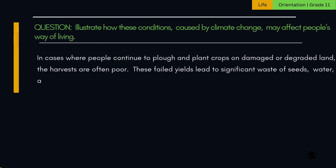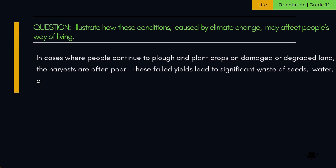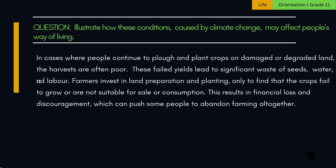In cases where people continue to plow and plant crops on damaged or degraded land, the harvests are often poor. These failed yields lead to significant waste of seeds, water, and labor. Farmers invest in land preparation and planting, only to find that the crops fail to grow or are not suitable for sale or consumption. This results in financial loss and discouragement, which can push some people to abandon farming altogether.